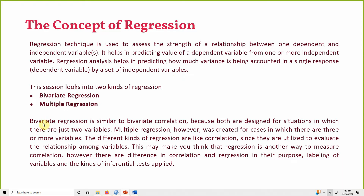Bivariate regression is similar to bivariate correlation because both are designed for situations in which there are just two variables. Multiple regression, on the other hand, is for cases where there are three or more variables — one of them is the dependent variable while the others are independent variables.